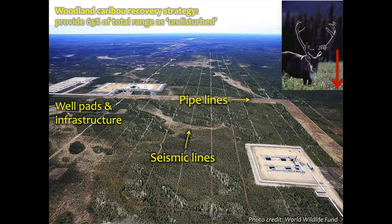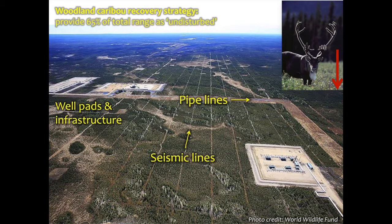One of the issues pushing conservation concerns around linear features is the woodland caribou recovery strategy, which suggests that within caribou ranges, at least 65% of the total area should be left undisturbed. One challenge is that if you apply different buffer sizes around disturbances — some buffers of 500 meters have been suggested — you quickly lose all the habitat, leaving very little for caribou.